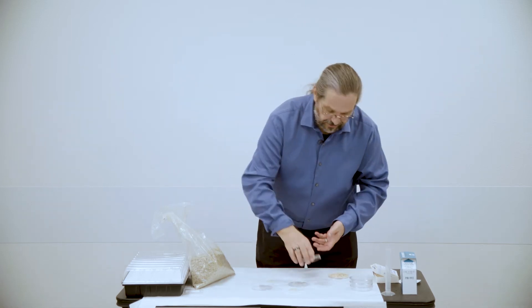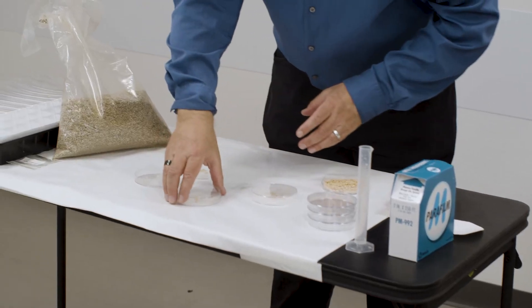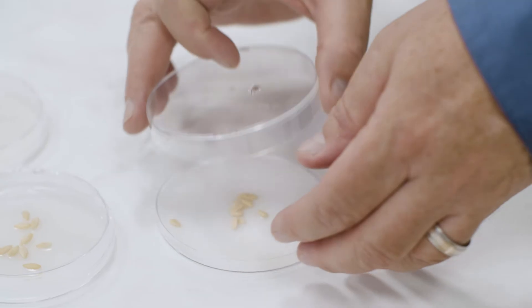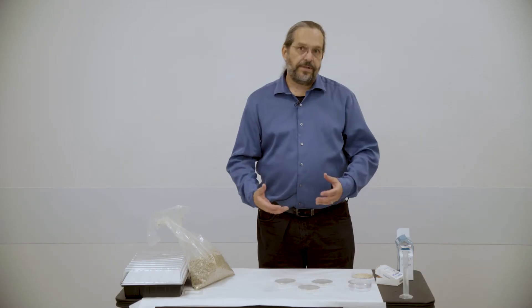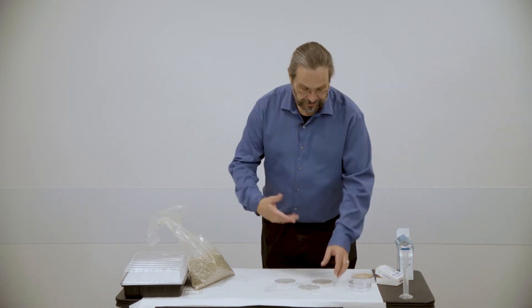So once you get that water in, you get the seeds in, you get the filters together, you're going to go ahead and put the lids on the petri dish. So once you've gotten the seeds into the petri dishes with your solution and the like, this last step you want to take is you want to grab some parafilm and you want to seal the petri dish up.